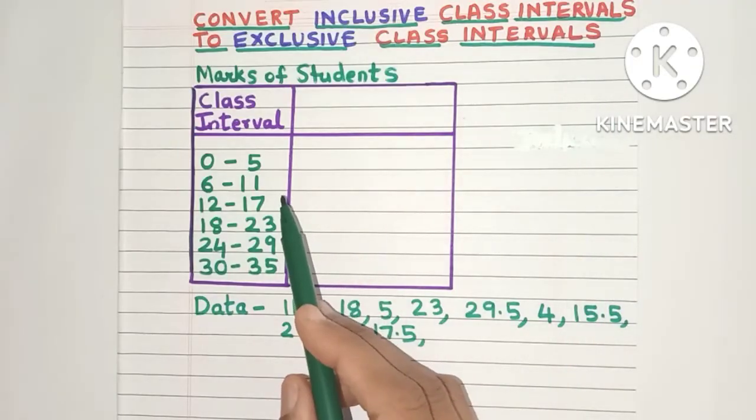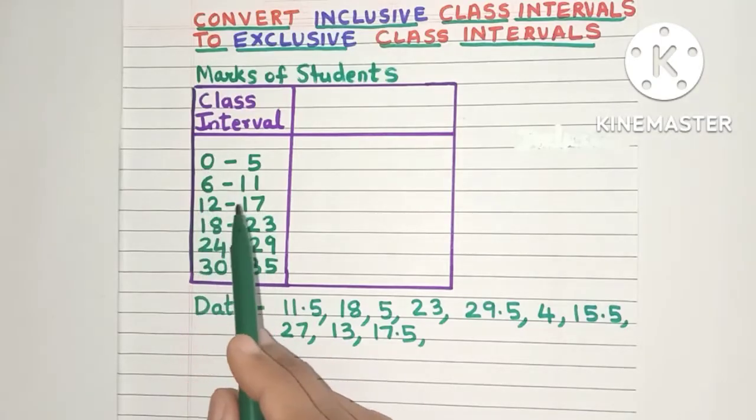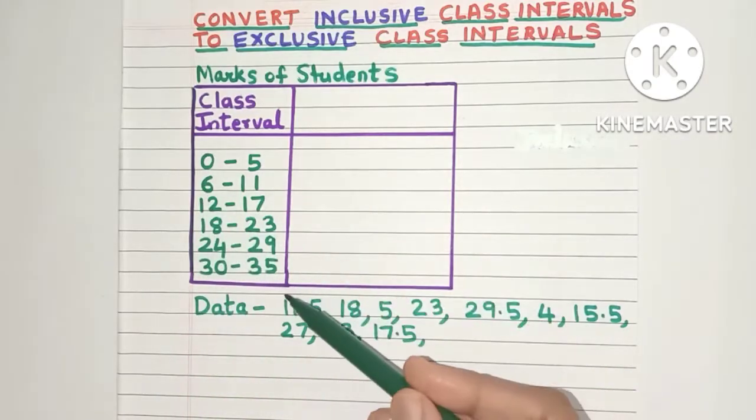So here we have the class interval column. These are marks of students. So you have 0 to 5, 6 to 11, 12 to 17 and so on.